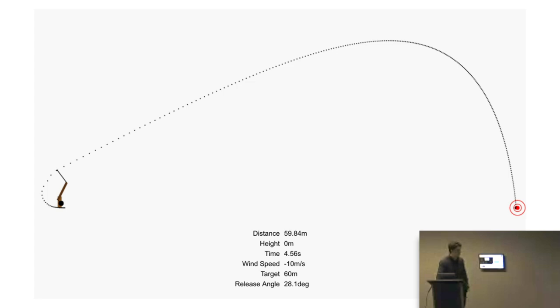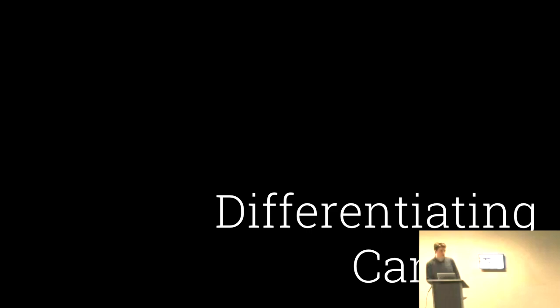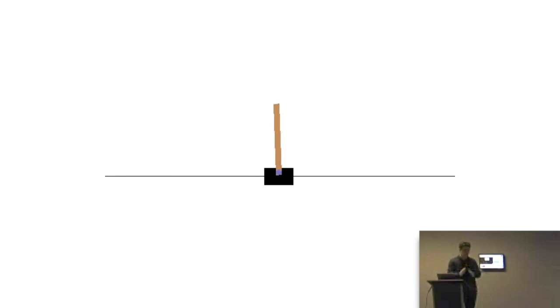One more example: the cart pole. The trebuchet might seem like an ideal case for this approach, but the cart pole is a more standard model in deep learning with well-developed approaches. The cart pole problem involves a cart with a long rod you're balancing — you have to move left and right so that as the pole falls over you keep it upright and make sure it isn't moving around too much.